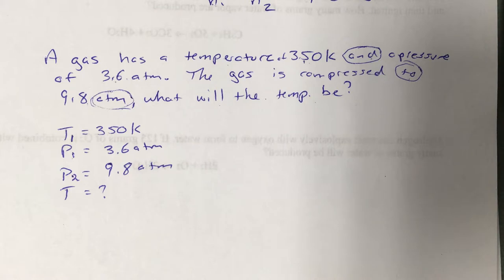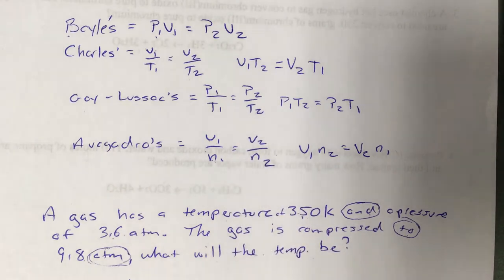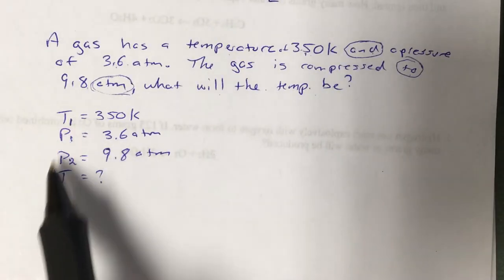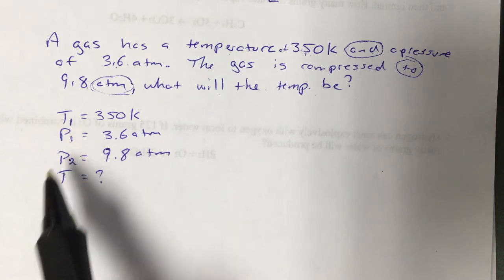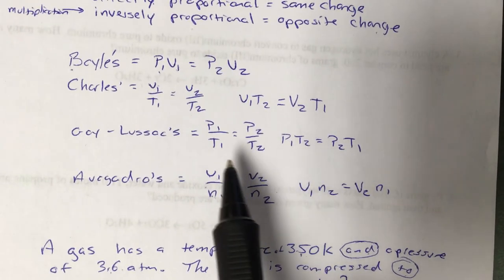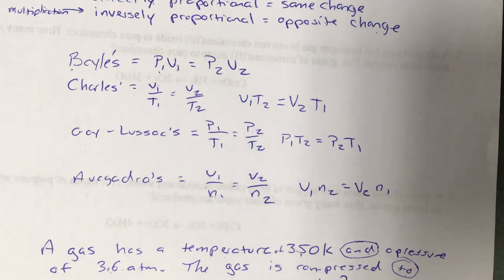Sometimes there will be other context clues like the word 'initial' or 'original,' meaning starting — that means one. Or 'final' or 'ending' — that's two. Now we have four equations to choose from. Picking the right one is a matter of listing what variables you have: two T's and two P's. There's only one equation with two T's and two P's in it — it's a Gay-Lussac's law problem.